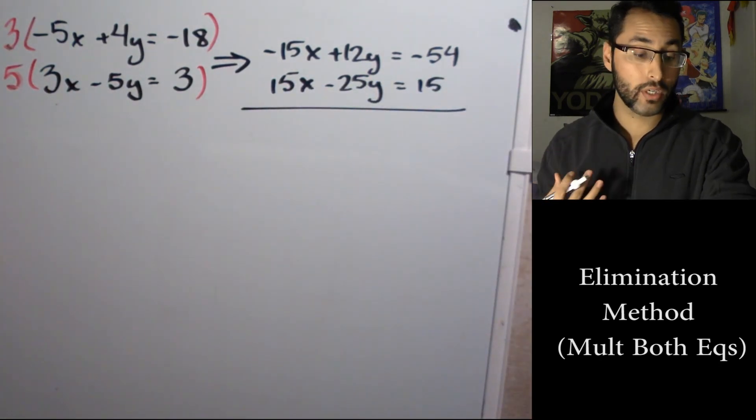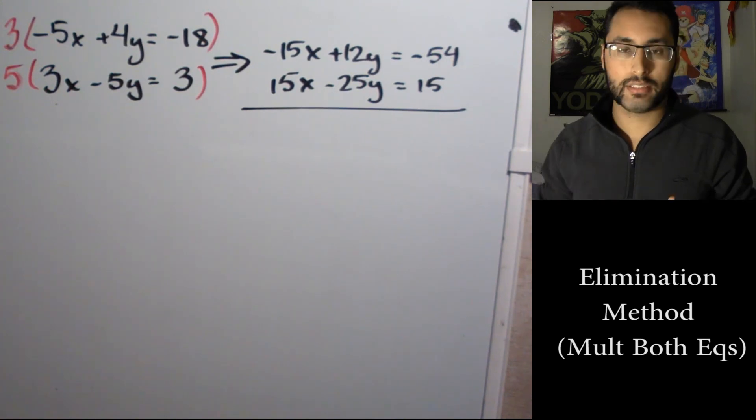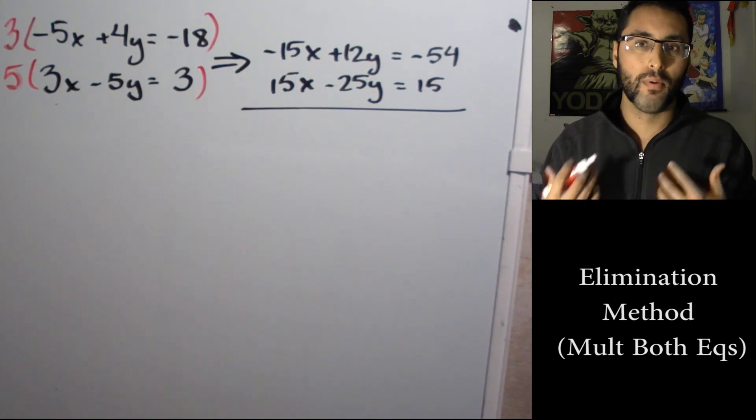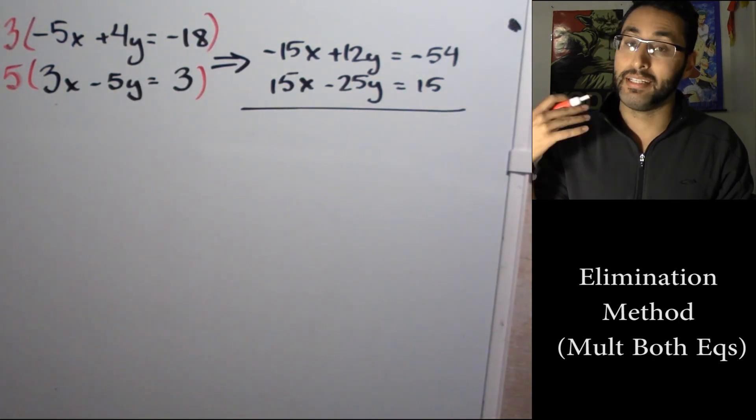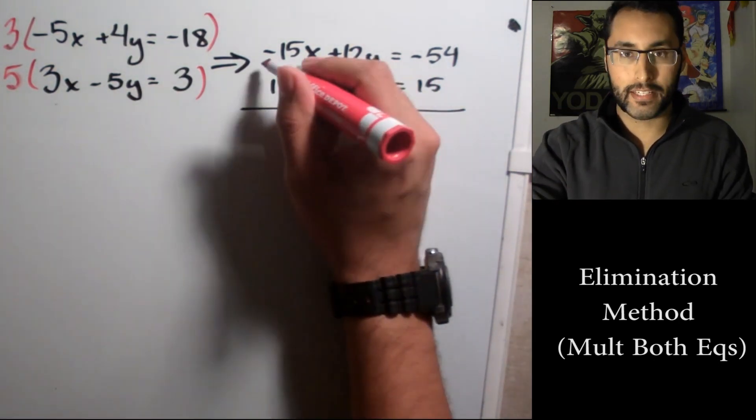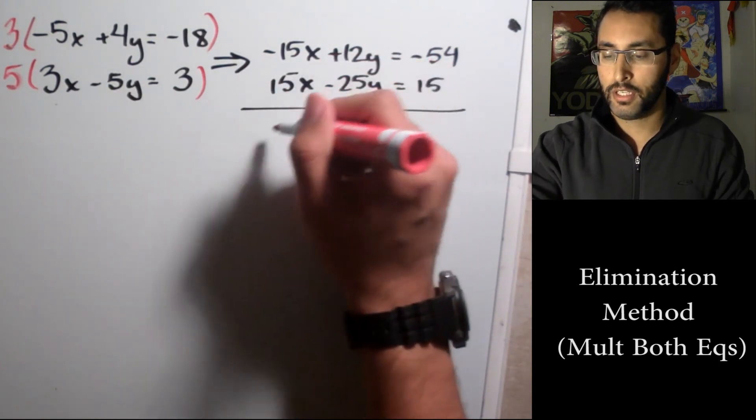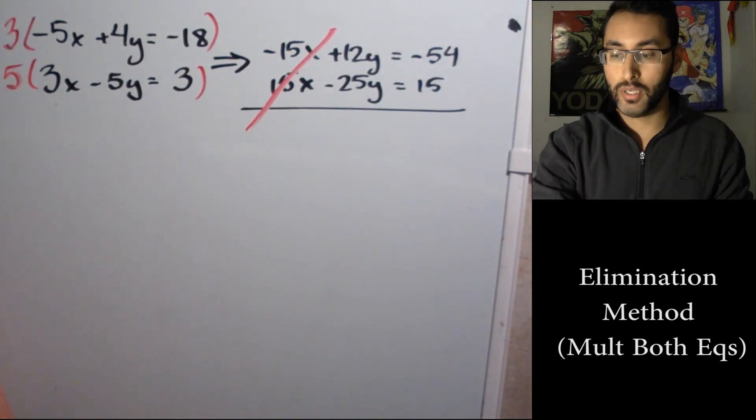All right, what we accomplished is we actually did eliminate. We multiplied both equations so that these two coefficients of x could become the same number and inverses, so that -15x and positive 15x go away. They're eliminated, that's what we want.